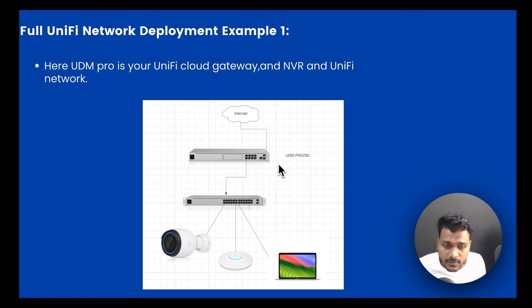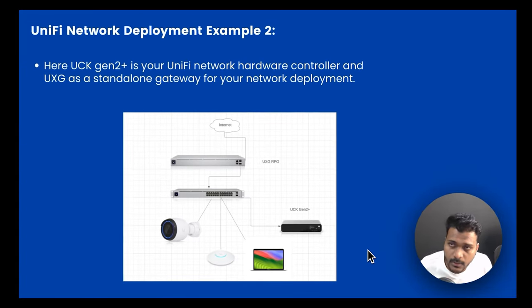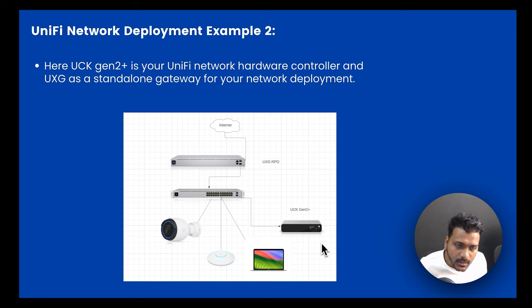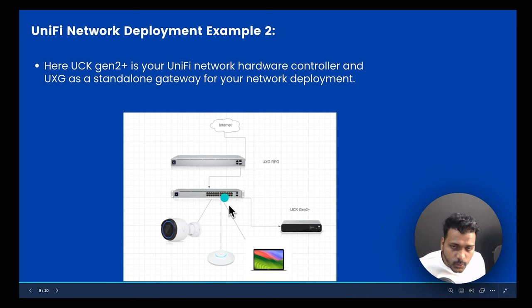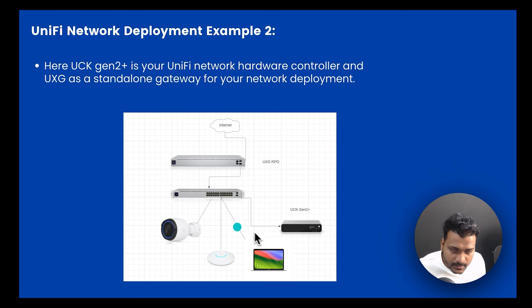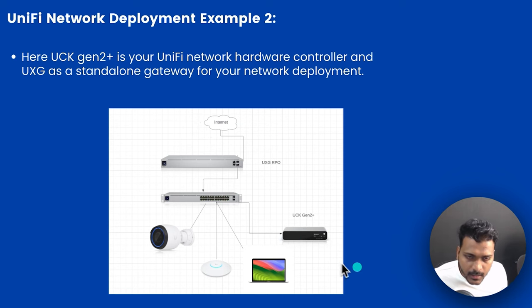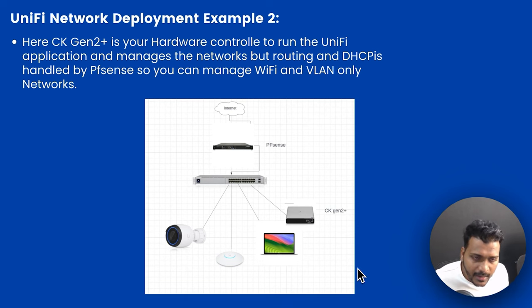The second deployment example uses a Cloud Key Gen 2 Plus as the UniFi Network controller, while a USG Pro or UniFi Cloud Gateway Pro acts as a standalone gateway. The gateway handles DHCP and routing, and the network controller runs on the Cloud Key Gen 2 Plus. You can also add a UNVR or UNVR Pro for UniFi Protect and large camera deployments in this setup.